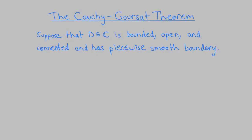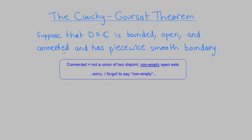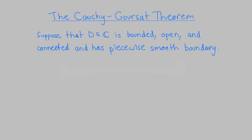We're now ready for our first big theorem. Suppose d is a bounded, open, and connected subset of the complex plane whose boundary is piecewise smooth. To be bounded means d is contained in a large enough disk. For a subset of the complex plane to be connected means it's not a disjoint union of two open subsets — equivalently, for open sets, every pair of points can be joined by a continuous curve lying entirely in the set.